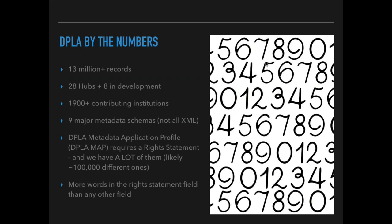Right now DPLA has over 13 million records aggregated from institutions throughout the country. We have 28 different hubs and eight currently in development, and over 1,900 contributing institutions. For example, in North Carolina there are about 200 institutions participating—very small public libraries, historical societies, and others. Minnesota similarly has over 200 institutions participating.